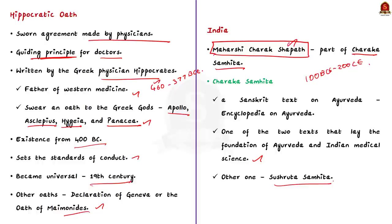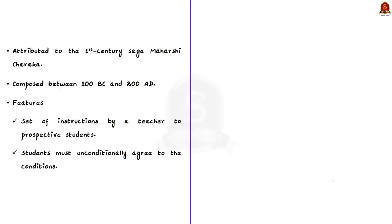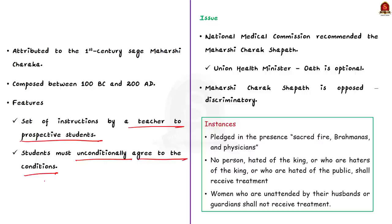The Maharishi Charaka Shapat is also a set of instructions by a teacher to prospective students, who must conditionally agree to these conditions in order to receive medical education. The National Medical Commission recently recommended that the Maharishi Charaka Shapat should replace the Hippocratic Oath. According to the new guidelines, the modified Maharishi Charaka Shapat is recommended when a candidate is introduced to medical education. The Union Health Minister noted that this Shapat would be optional and will not be forced on medical students.